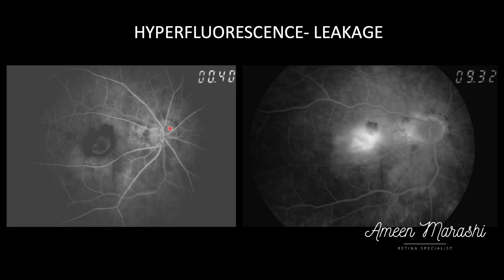In contrast, leakage will show increased hyperfluorescence in the early phase. Usually it has defined borders, but in late phases the borders become fuzzy with an increase in size.